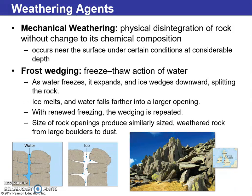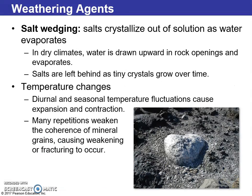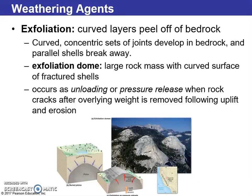Mechanical weathering is the physical disintegration of rock — you can see it breaking apart. It involves freeze-thaw action of water going through cracks, expanding, and cracking through ice wedging and frost wedging. Salt wedging occurs when salt crystallizes out of solution as water evaporates in dry climates, leaving behind tiny crystals in rock openings over time. Temperature changes also cause weathering, and exfoliation is when curved layers peel off of bedrock, forming exfoliation domes — we see some examples below.